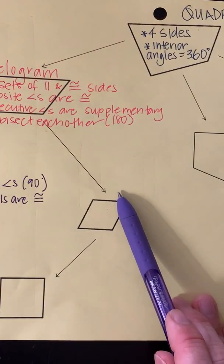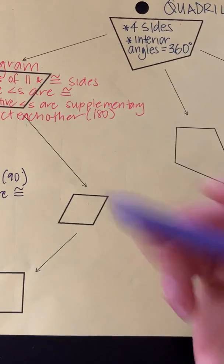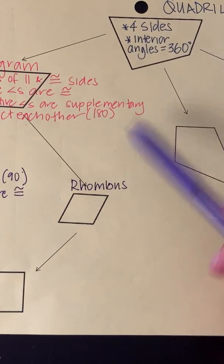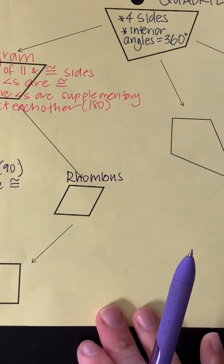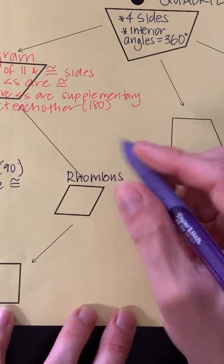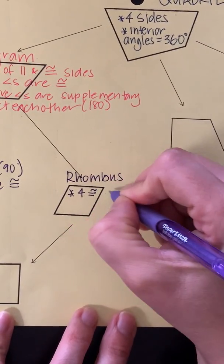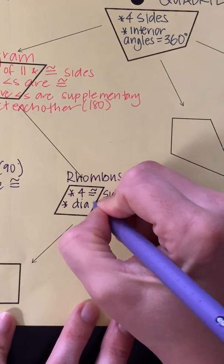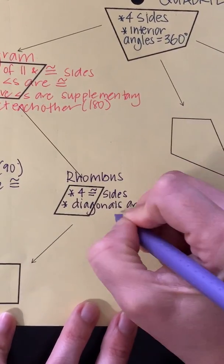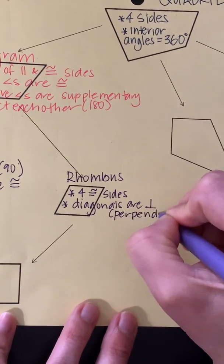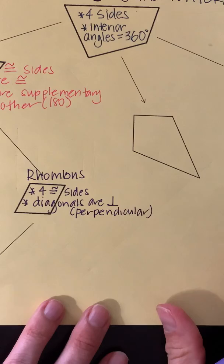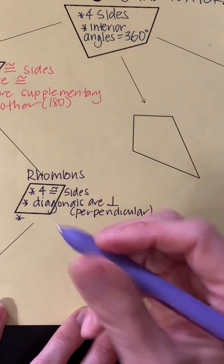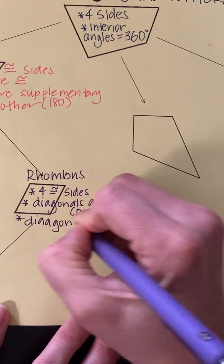Now sliding over to our rhombus. Everything about a parallelogram also applies down to our rhombus. There are three more properties specific to a rhombus compared to a rectangle. First, all four sides are equal — four congruent sides. Second, the diagonals are perpendicular. And third, the diagonals also bisect the opposite angles. You might want to look that last one back up in your notes.